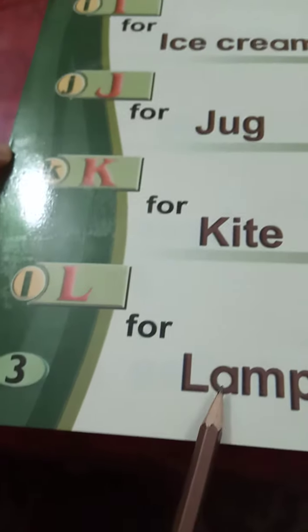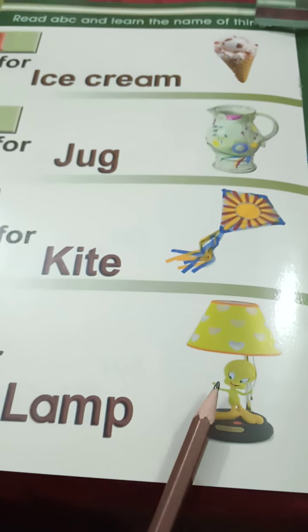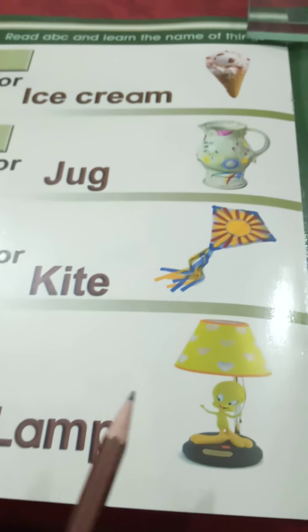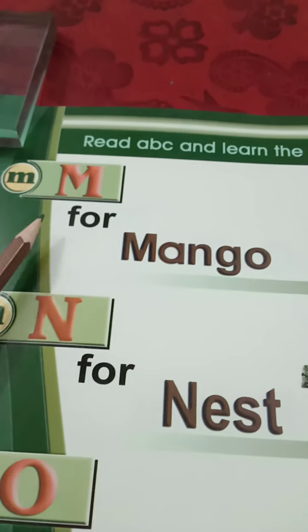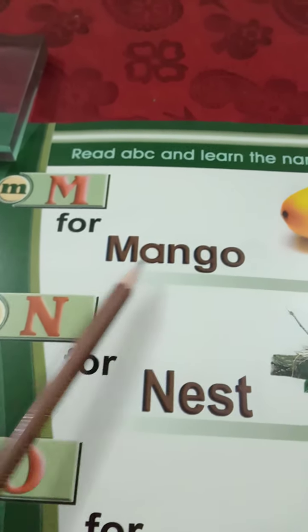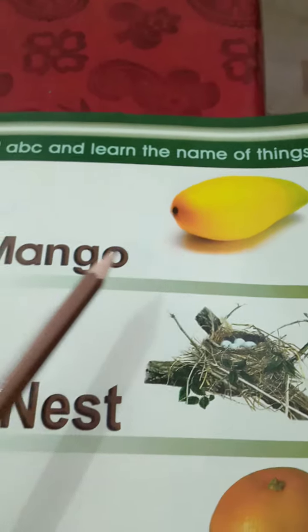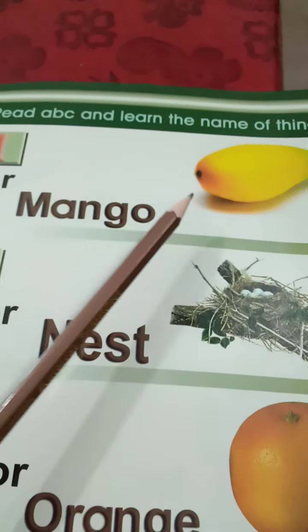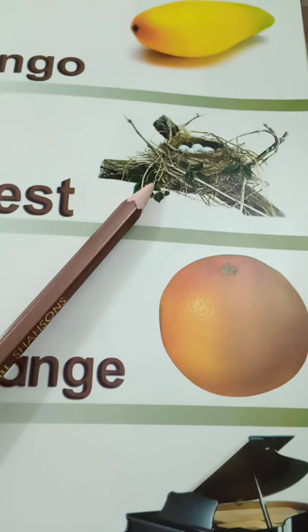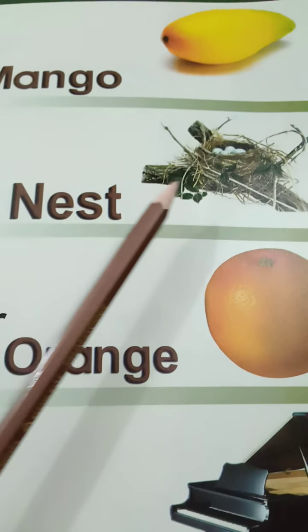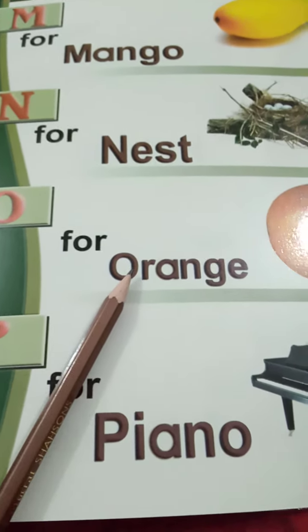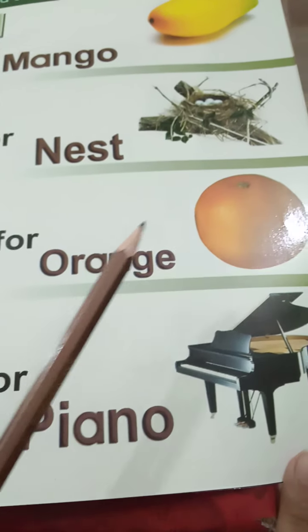L for Lamp. Lamp means Lamp. M for Mango. Mango means Aam. N for Nest. Nest means Ghosla. O for Orange. Orange means Narangi.